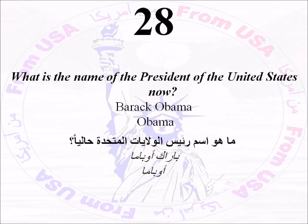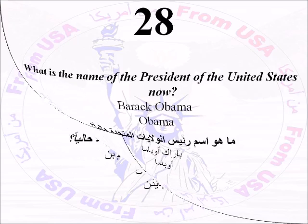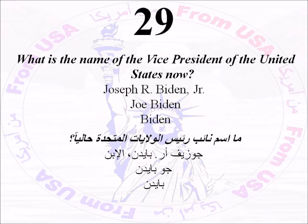Number Twenty-Eight: What is the name of the president of the United States now? This answer will change depending on the outcome of an election, but right now the president's name is Barack Obama. Number Twenty-Nine: What is the name of the vice president of the United States now? Joe Biden.